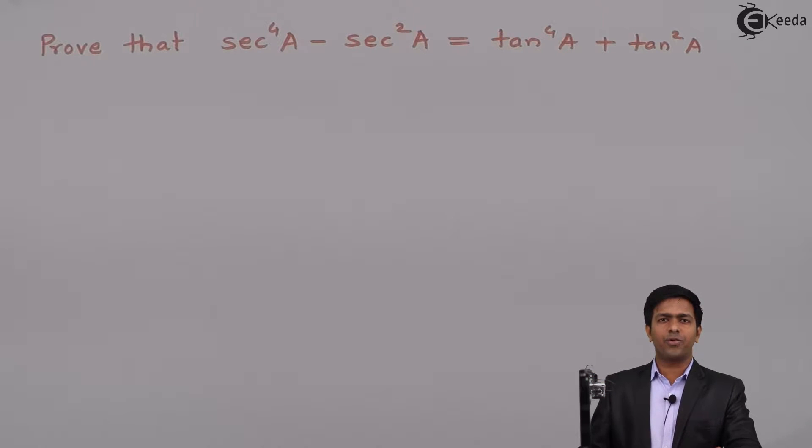Hello friends, so here we have to prove that sec raised to 4A minus sec square A is equal to tan raised to 4A plus tan square A.